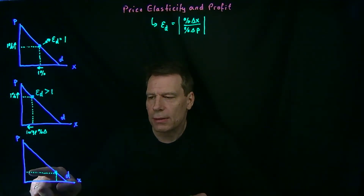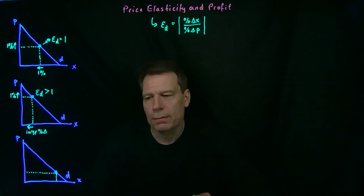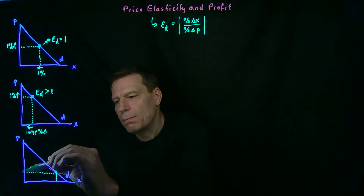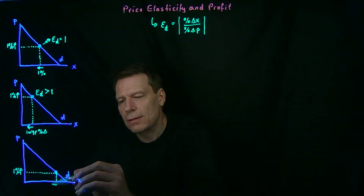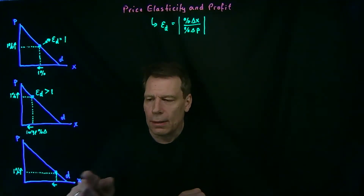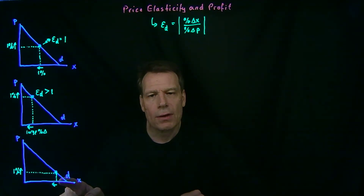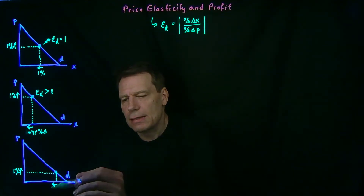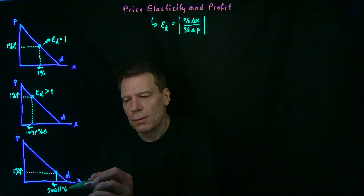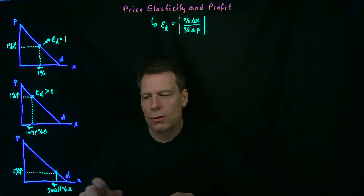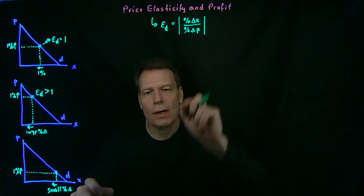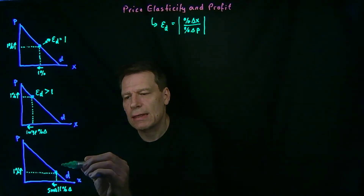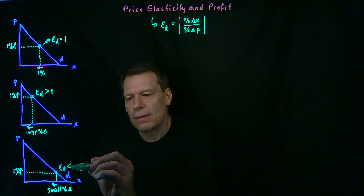What if we started at a point below the midpoint of the demand curve? Then a 1% increase in price will again lead to a decrease in quantity demanded, but because we started with a very large quantity to begin with, this ends up being a small percentage change. So now we have a percentage change in quantity that's less than 1 divided by 1, which gives us an elasticity of demand less than 1.